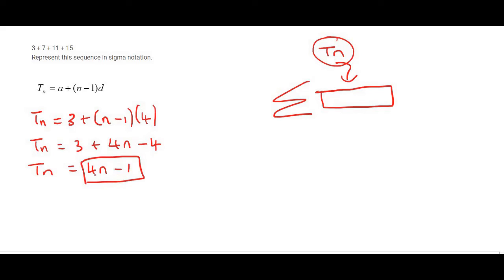And we take that and we put it inside the sigma notation. So inside the sigma notation I'm just going to say 4n minus 1.